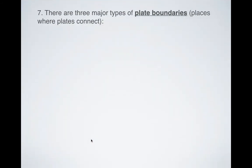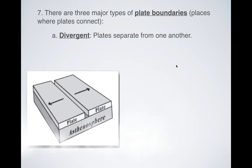Let's take a look. There are three major types of plate boundaries. Plate boundaries are just places where the plates connect to one another, where these cracks are, the locations of these cracks. The first are called the divergent plate boundaries. So divergent plates separate from one another. You can see you have your asthenosphere here, you have one plate going here, and you have one plate going that direction. That would be a divergent plate boundary.